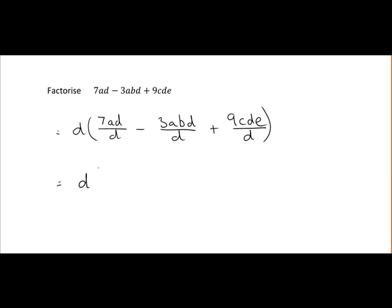That will give us d multiplied by 7ad divided by d. The d's cancel, so you're left with 7a. 3abd, again the d's cancel, so you're left with minus 3ab. And again here the d's cancel so you're left with plus 9ce. And that's our expression factorized.